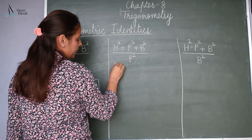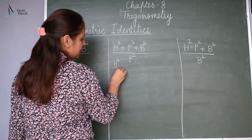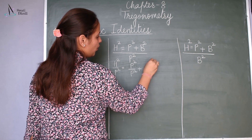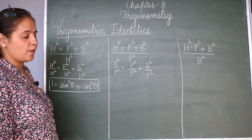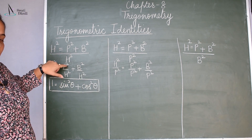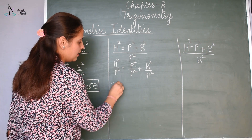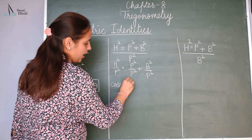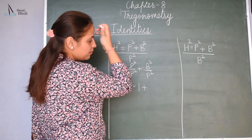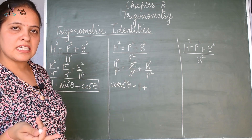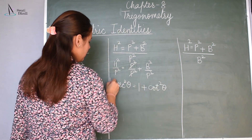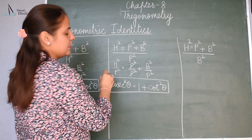Now, H square by P square is equal to P square by P square plus B square by P square. H by P is the reciprocal of sine, so its reciprocal is cosecant. So it will be cosecant square theta is equal to — this cancels — 1 plus B by P. Now P by B is tan theta, so its reciprocal is cot theta. So this will be cot square theta. This is your second identity.